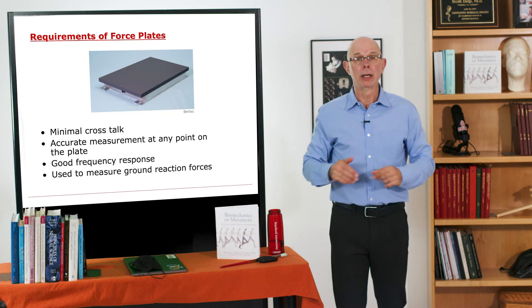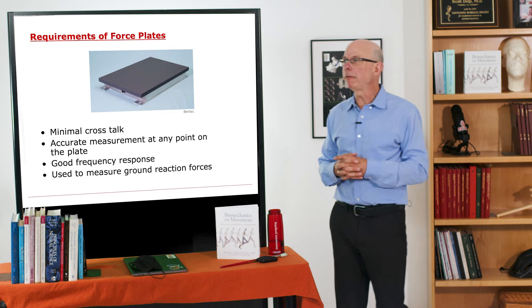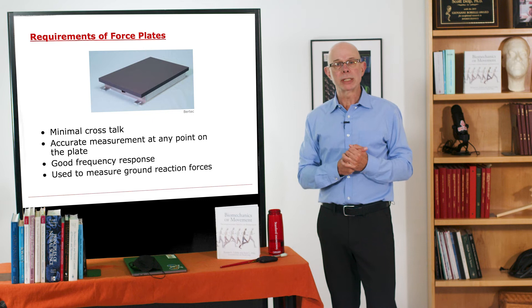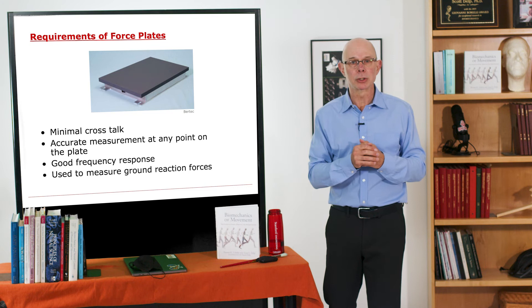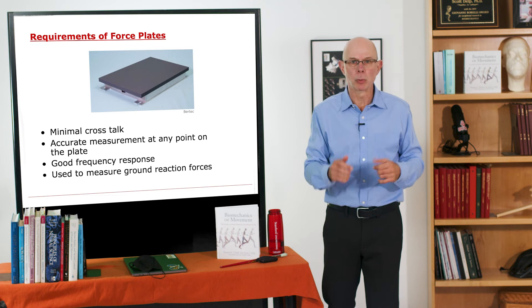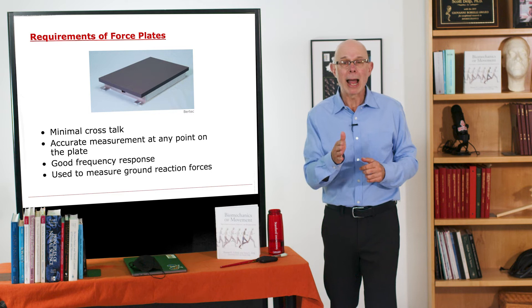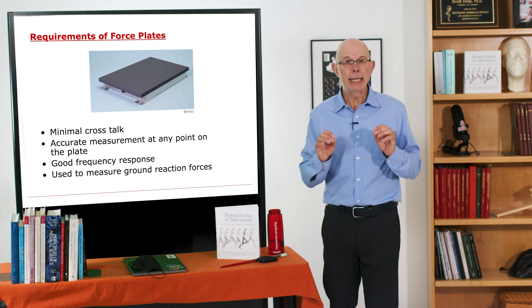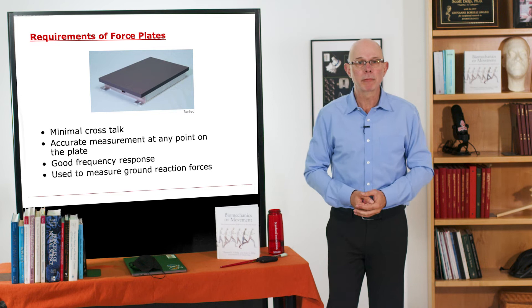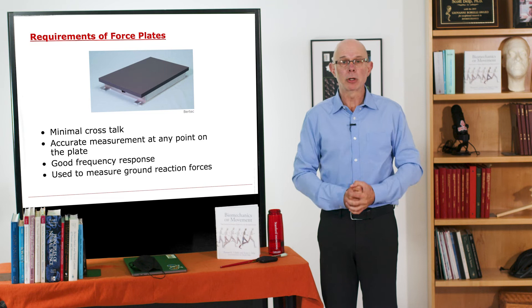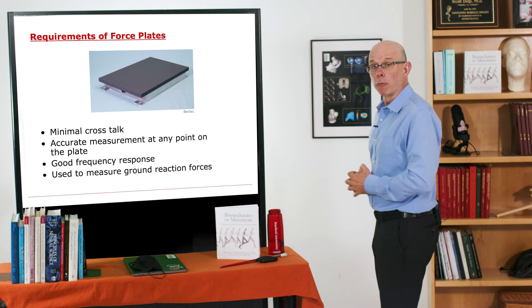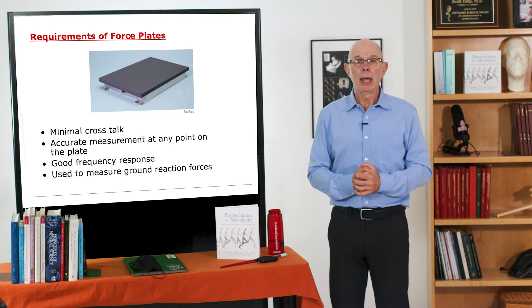There are some key features we want in a force plate. First, minimal crosstalk — we want to separate the vertical and horizontal ground reaction forces without a vertical force reading out as horizontal or vice versa. In fact, there's also a side-to-side ground reaction force, so we want independent signals for vertical, fore-aft, and side-to-side components. All of those influence how the mass center is accelerating: the vertical influences vertical acceleration, fore-aft influences forward-backward acceleration, and medial-lateral indicates side-to-side acceleration, which is critically important for maintaining balance.